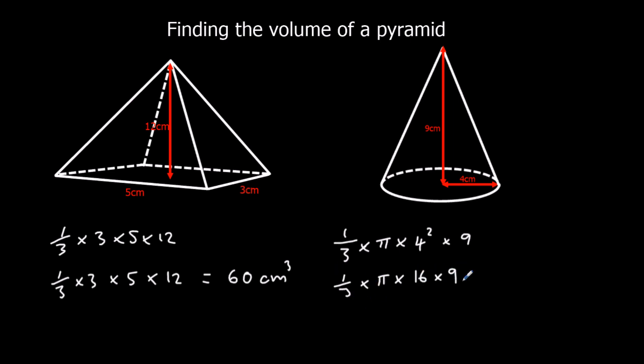So we've got a third of nine is three, so it's three times sixteen times pi, which is forty-eight pi. Forty-eight pi. Again, centimeters cubed, because it's volume.